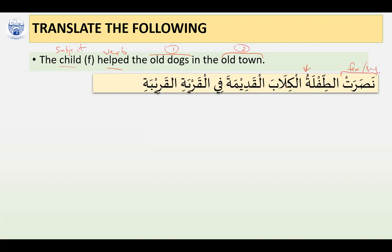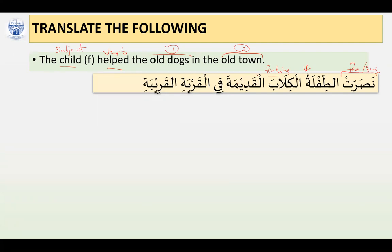Then we have the word Kilab, the plural of Kalb. Kilab is a broken plural, and it does not refer to human beings. Remember: all broken plurals not referring to human beings will be treated as singular feminine. So we look at this word as being like a feminine singular in usage, and this is how we determine the agreement for the adjective. The adjective 'old' — Qadimun — becomes Al-Qadimata, because it is the object of the sentence.